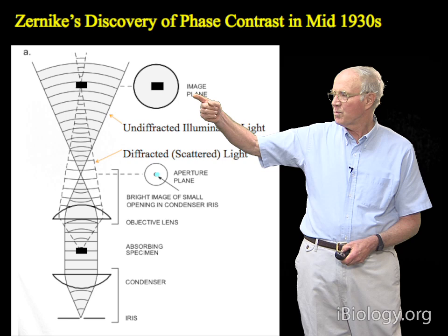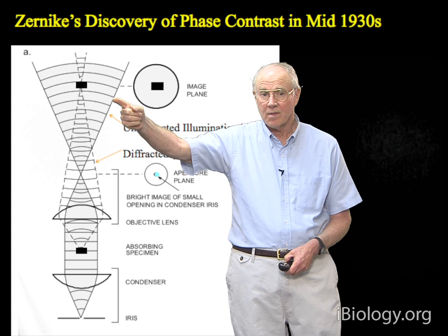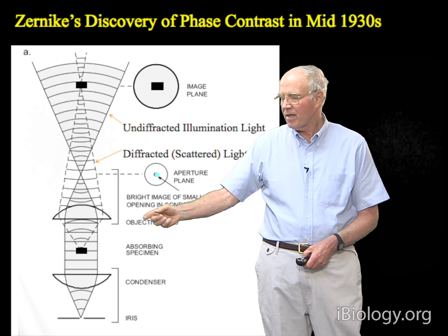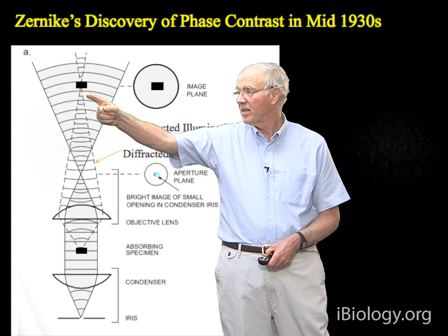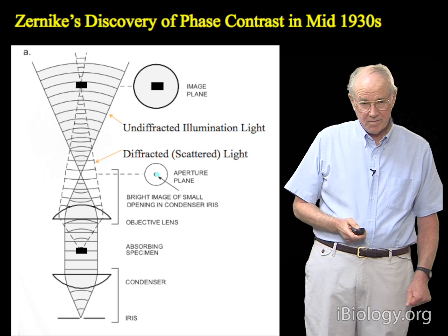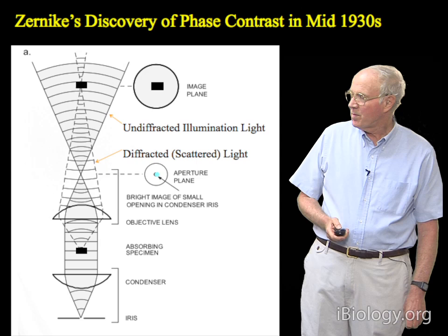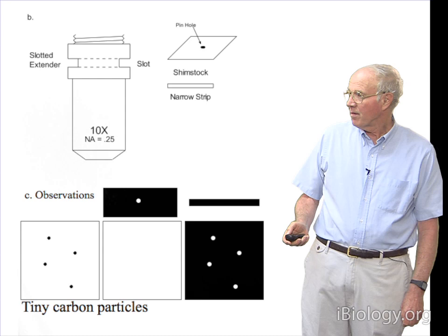That light then spreads out from that point and becomes spread into even illumination across the image plane. On the other hand, the light that the specimen scatters or diffracts is collected by the objective and is focused as a real image up at the image plane by the microscope objective. What one sees by eye, if you look in the microscope, is these very fine specks of black carbon particles.